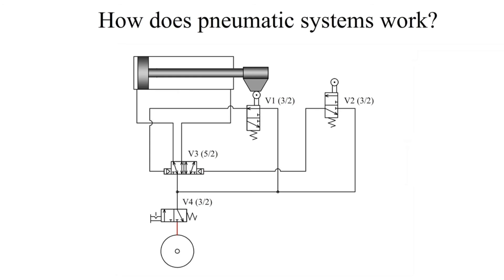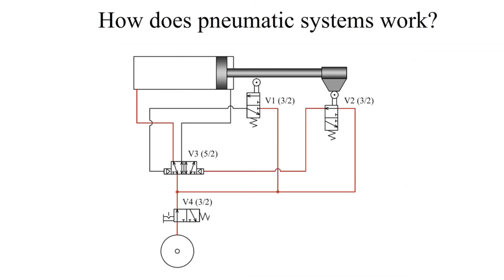How does pneumatic systems work? When the manual three-way valve is actuated, the cylinder will extend and then reverse direction continuously each time it reaches either limit.